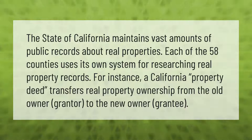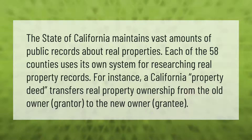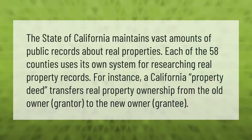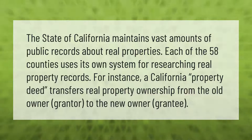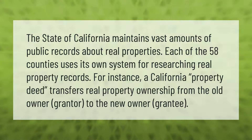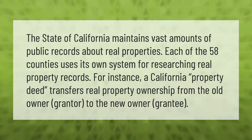The state of California maintains vast amounts of public records about real properties. Each of the 58 counties uses its own system for researching real property records. For instance, a California property deed transfers real property ownership from the old owner, the grantor, to the new owner, the grantee.